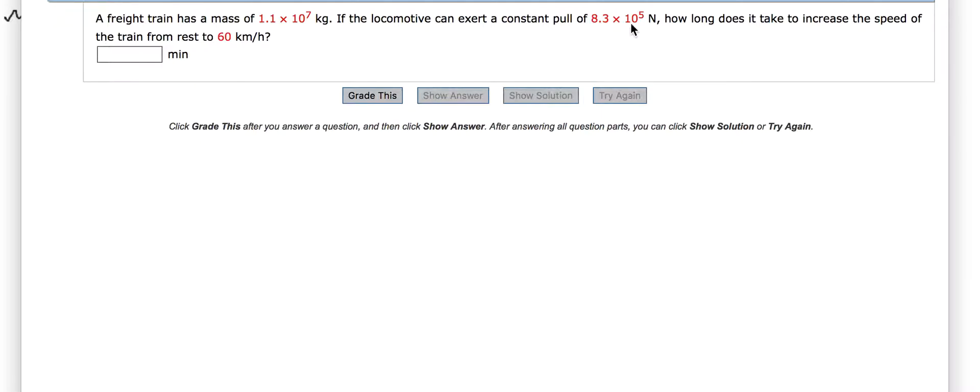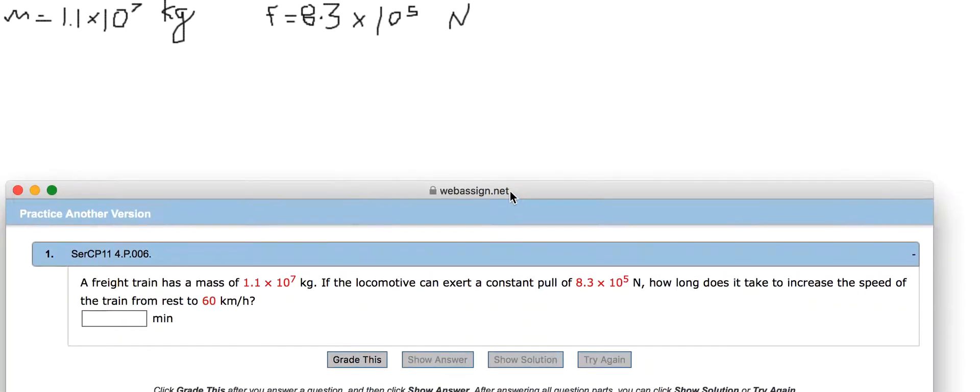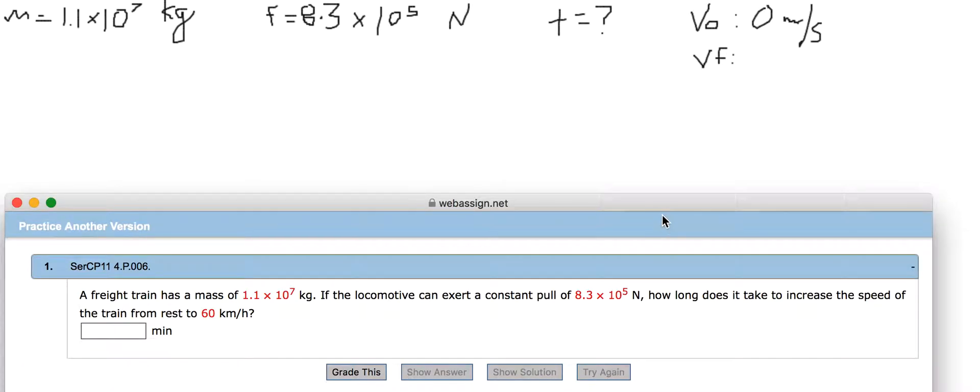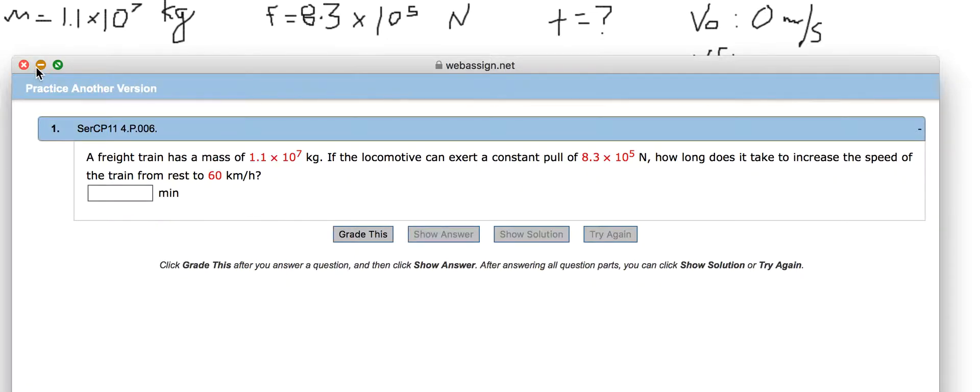So we're trying to find the time it takes to accelerate there, so we're looking for T. We're looking for the time, and we know that it's accelerating from rest. So V0 is 0 meters per second, and our final velocity is going to be 60 kilometers per hour.